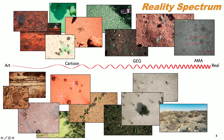We have our reality spectrum here, so you can see more clearly what that abstraction looks like. There are very abstracted features on the art and cartoon end, and then it gets very high-frequency, detailed imagery on the right end of the reality spectrum.